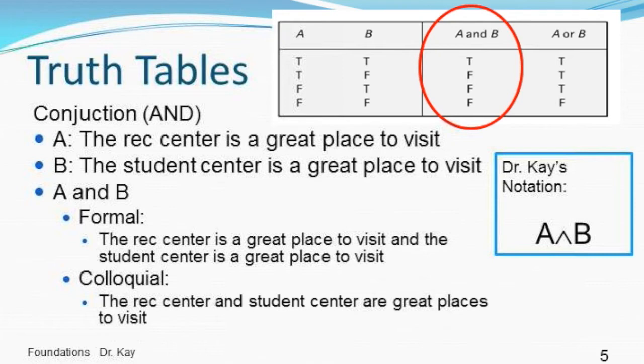Here is the truth table for conjunction. Conjunction is just a fancy name for and. If we have two statements, now we're calling our statements A and B. The rec center is a great place to visit is A. B is the student center is a great place to visit. Then formally the conjunction of A and B is simply the rec center is a great place to visit and the student center is a great place to visit. Colloquially, if we're just saying it in English, we might say the rec center and student center are both great places to visit. And again, this is a fairly common notation using this sort of caret notation to represent and. Your book just uses the word and. Here's the truth table for A and B. You should be very familiar with this. If both A and B are true, then the truth table reports true. For anything else, if either A or B is false, then A and B is false.